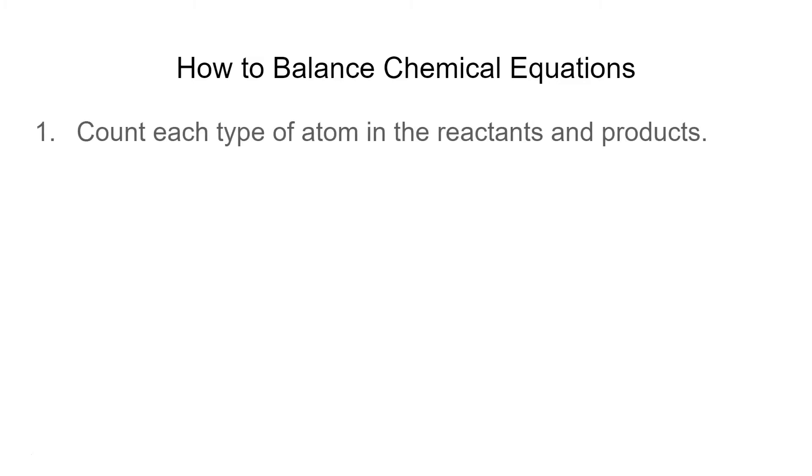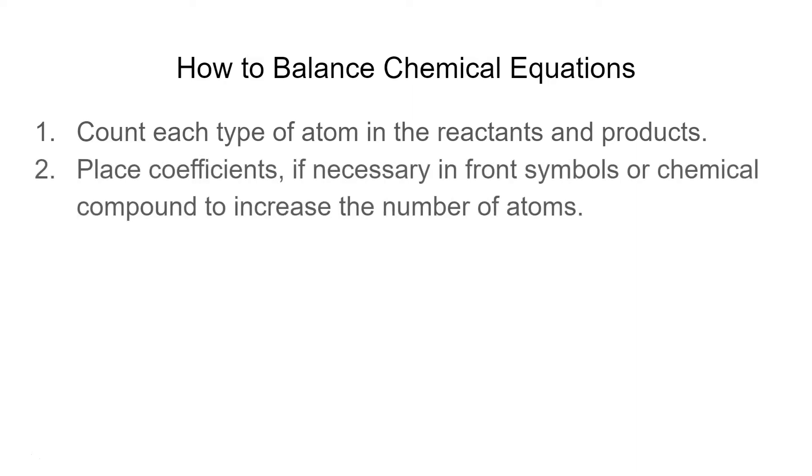The first one is you need to count each type of atom in the reactants, so on the reactant side and then on the product side. And you are going to place coefficients if necessary in front of the symbols or chemical compound to increase the number of atoms to make sure that each side is balanced.